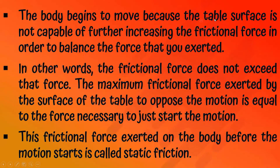The body begins to move because the table surface is not capable of further increasing the frictional force in order to balance the force that you exerted. In other words, the frictional force does not exceed that force. The maximum frictional force exerted by the surface of the table to oppose the motion is equal to the force necessary to just start the motion. This frictional force exerted on the body before the motion starts is called static friction.